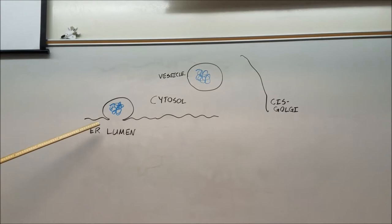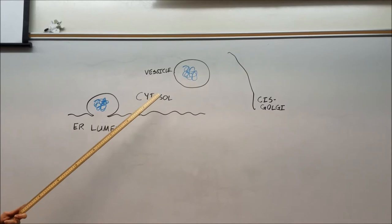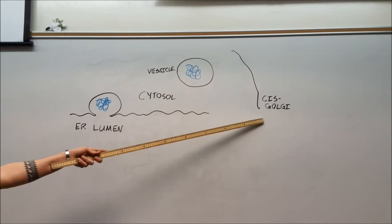Next, the completed protein will begin to bud into vesicles on the endoplasmic reticulum membrane, where these vesicles will travel through the cytosol to the cis side of the Golgi apparatus.